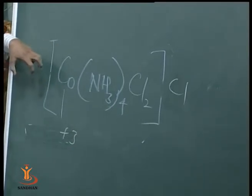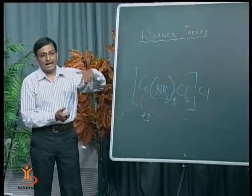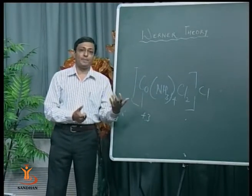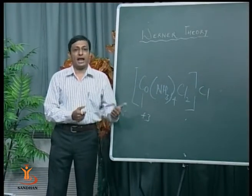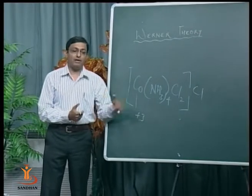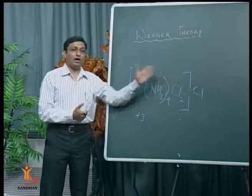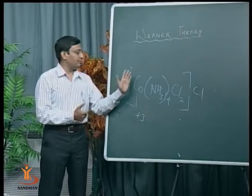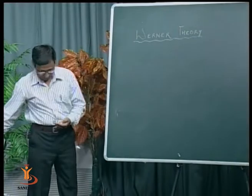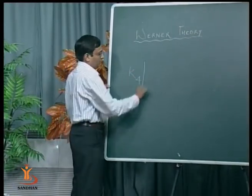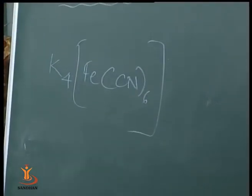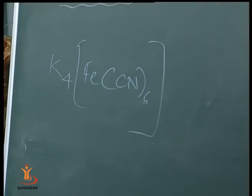Remember: the central metal ion in a complex compound is either neutral or a cation. The ligand, which has at least one lone pair and acts as a Lewis base, is either neutral or an anion. Those atoms linked with the central metal ion by primary valency — by ionizable valency — are either anions or cations. If it is a cation, we write it in the prefix.